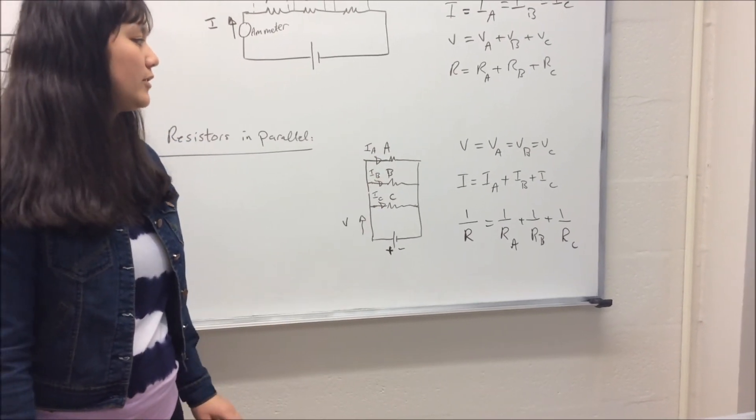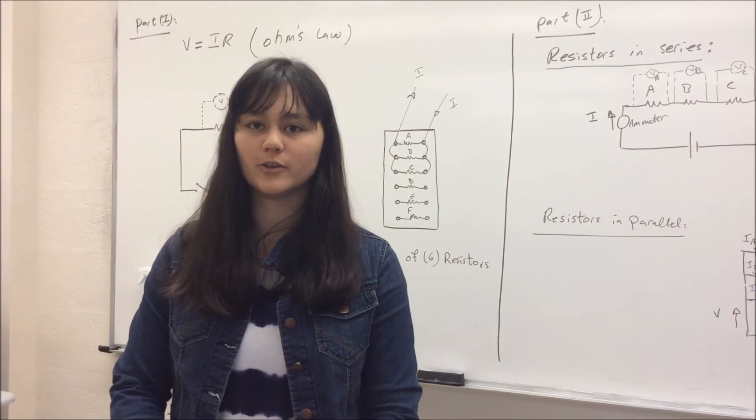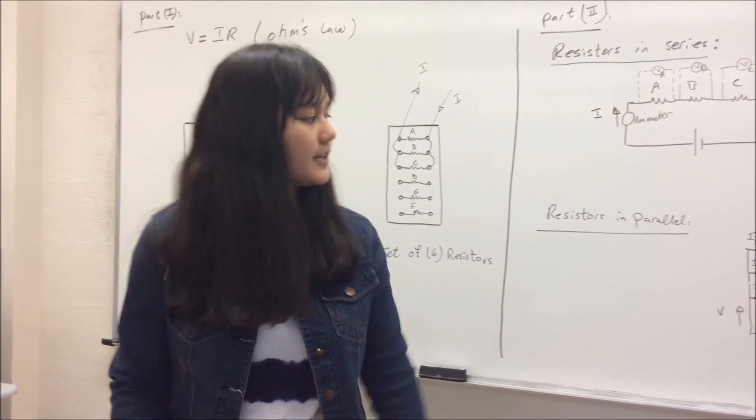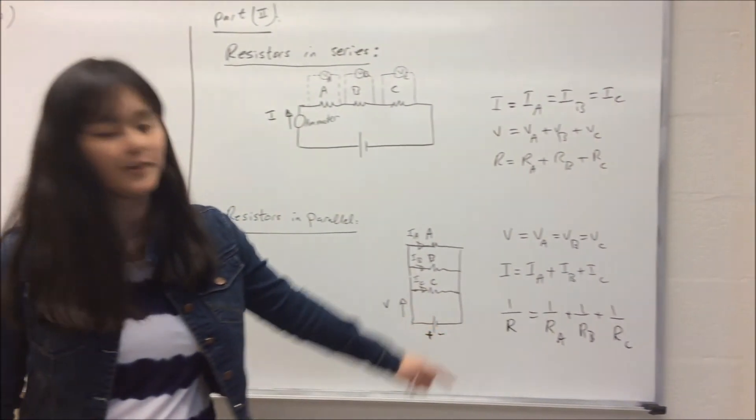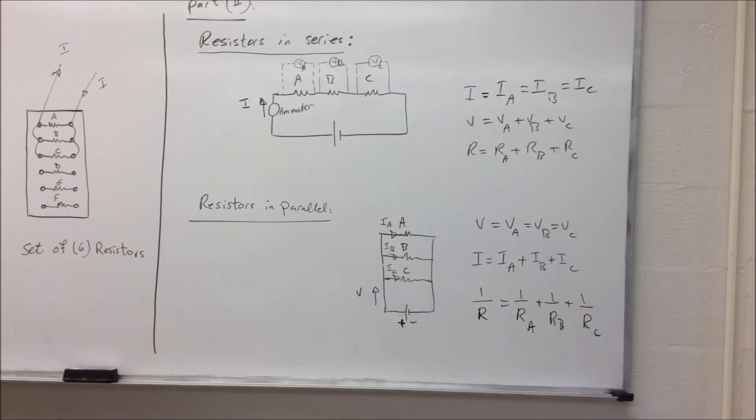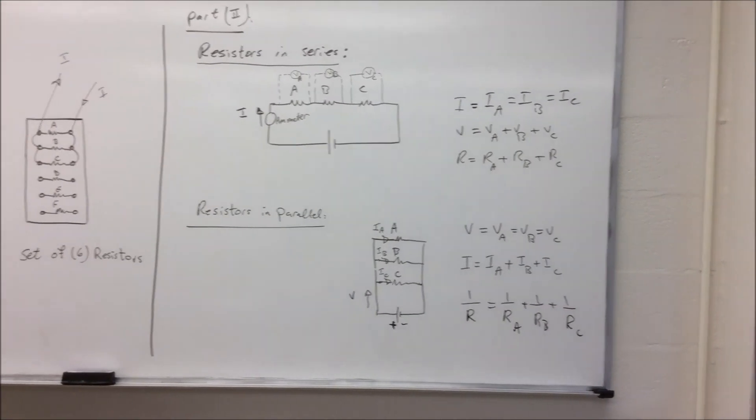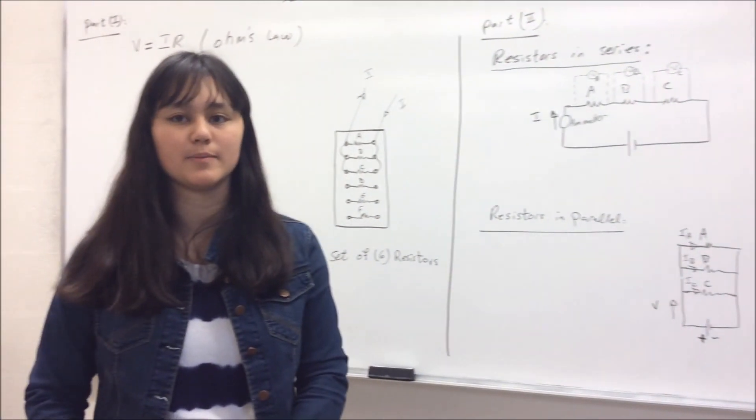And when you do this, the voltage should be constant. If you've recorded your data, you're going to use these equations here to calculate the theoretical values of current and then compare those to the measured values by using the percentage error.